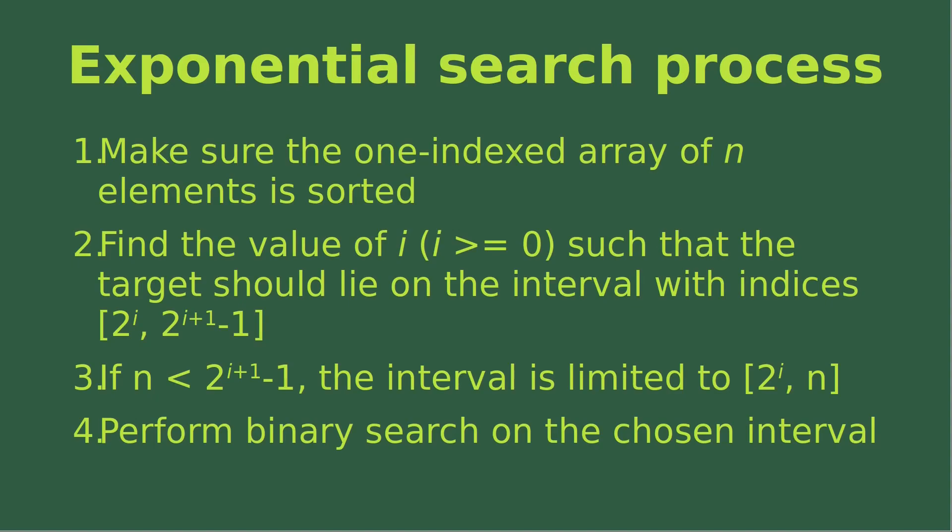Number two, we have to find out the value of i, which is at least 0, such that the target should lie on the interval with indices 2 to the power of i and 2 to the power of i plus 1 minus 1. That is the window we have to determine by finding out an appropriate value of i.